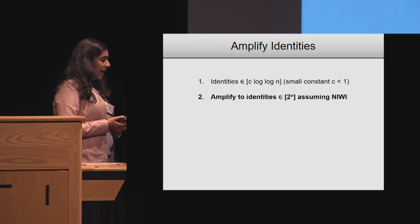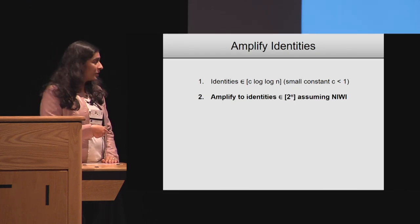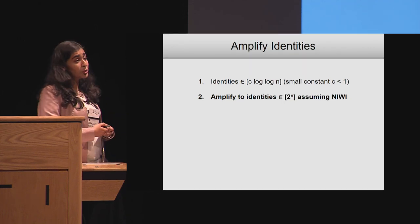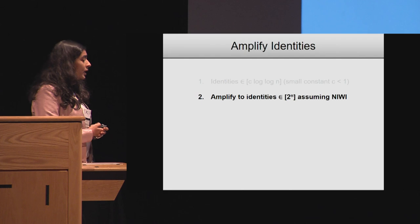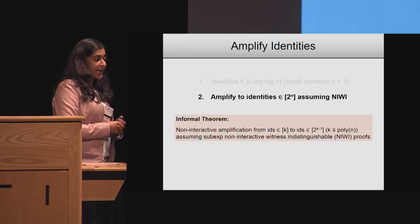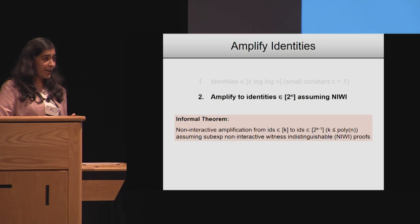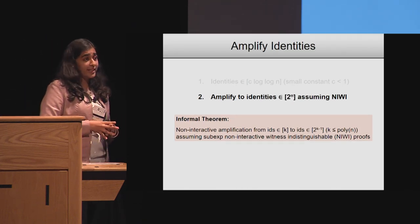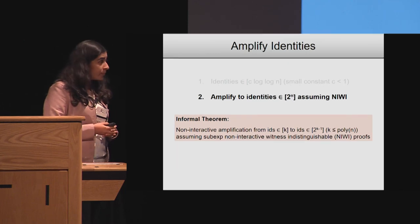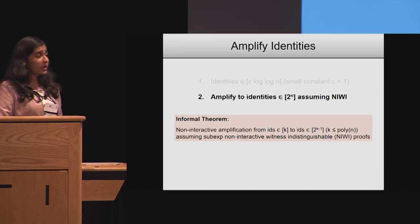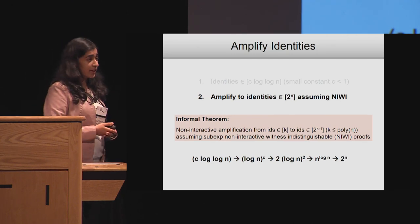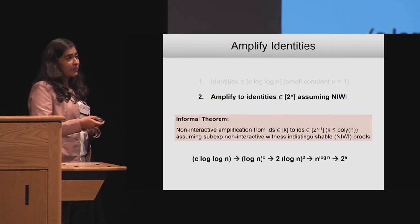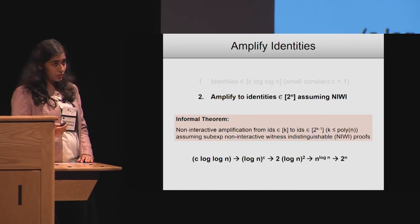With only one minute left, let me give some high-level insights on how we've managed to amplify this all the way to 2^n identities. We show that it's possible to non-interactively amplify the space of identities exponentially, assuming sub-exponential non-interactive witness indistinguishable proofs. However, amplifying c log log n exponentially gives something like log^c n, which is not enough, so we need to apply this amplification theorem multiple times to go all the way to 2^n.